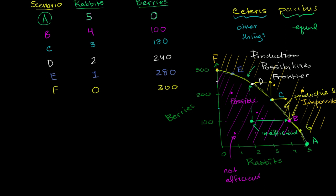But which of these do we pick? How do we decide to allocate our time? What I want to talk about in this video is allocative efficiency. And it's somewhat subjective, based on the preferences of the hunter-gatherer. But at least it gives us a framework for thinking about which of these meets our preferences the best.